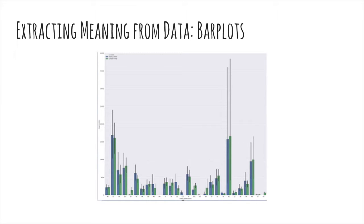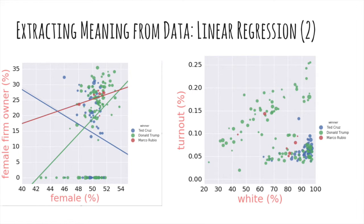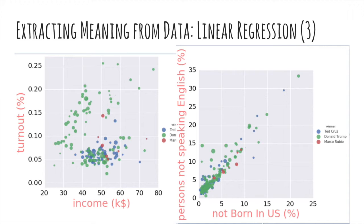The preparation of this bar plot required adding votes per candidate and sorting in ascending order. The selected candidates — Hillary Clinton in blue and Donald Trump in green — are shown on the plot. On the horizontal axis are abbreviations of the state names, and on the vertical axis are the votes and fraction of votes for each candidate. The previous work on six images groups the data to make sense of a linear regression, with a scatterplot background using different colors for each candidate. The six plots use: income versus white percentage; Hispanic percentage versus white percentage; percentage of female firm owners versus female percentage; turnout and voters against percentage of white population; turnout versus income; and percentage of persons not speaking English versus not born in the US.